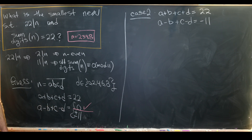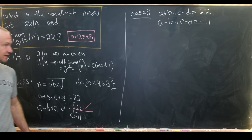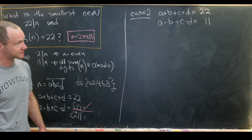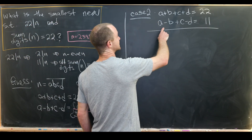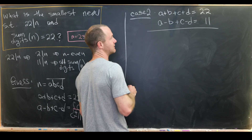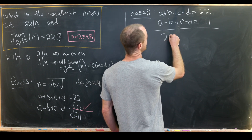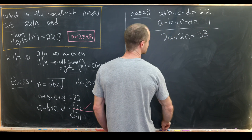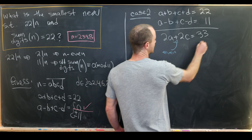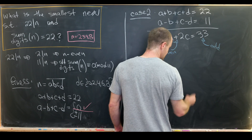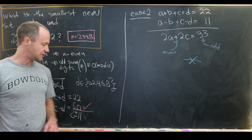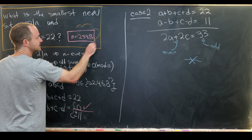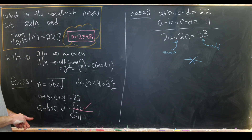In case two, where the alternating sum equals +11, adding the two equations gives 2a + 2c = 33. But the left side is even and 33 is odd, so there's no solution. Similarly, the case where the alternating sum equals −11 also yields no solution. Therefore, n = 2398 is indeed our smallest such number.